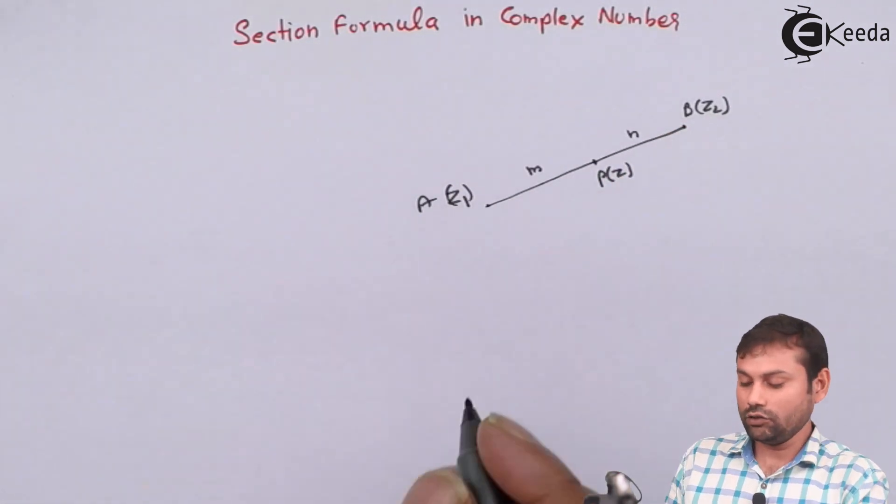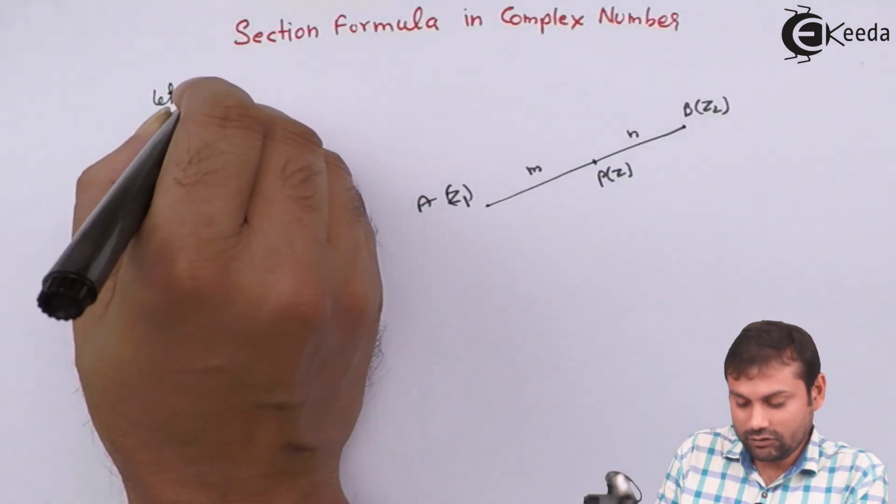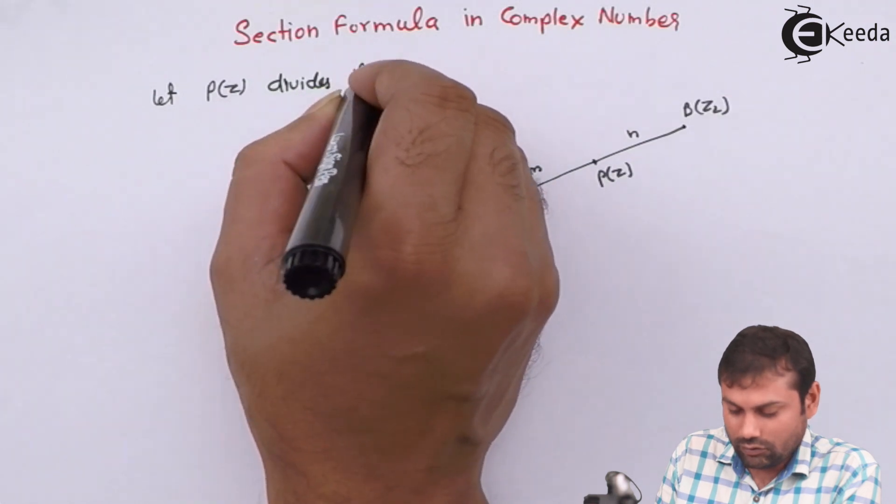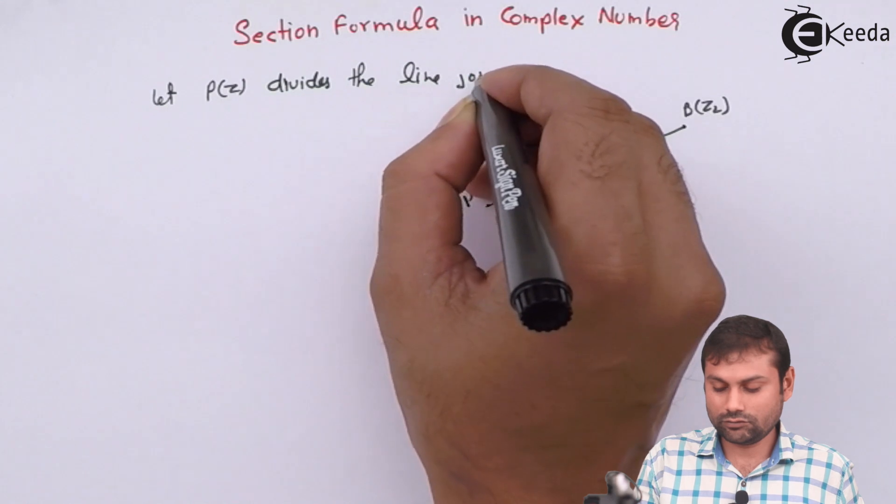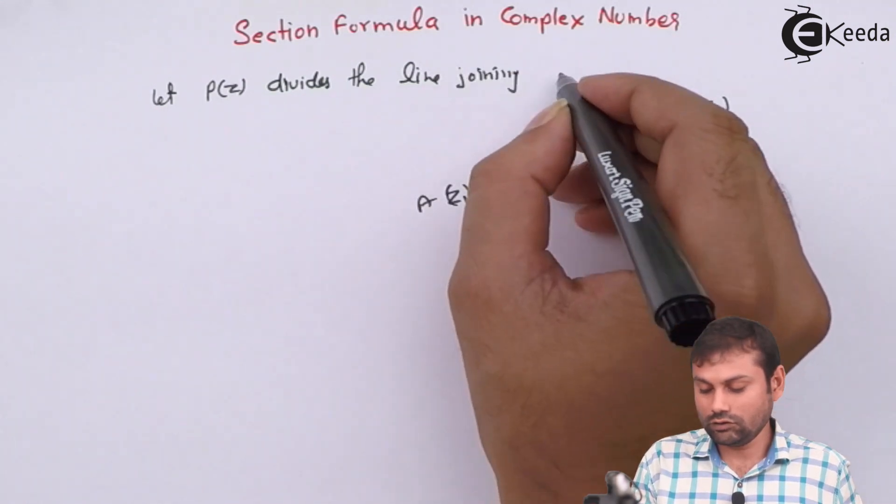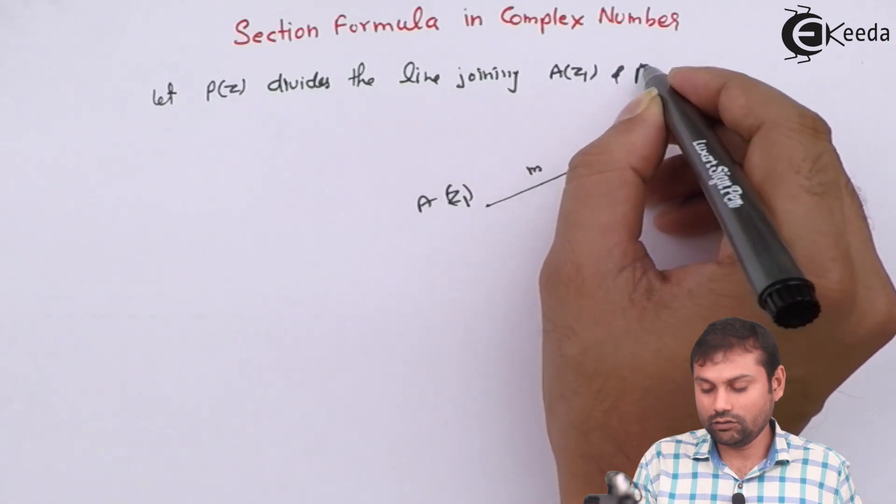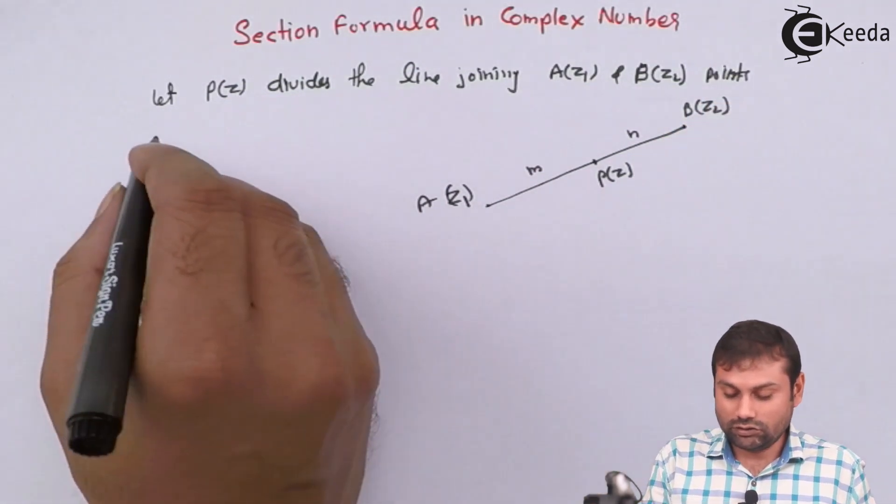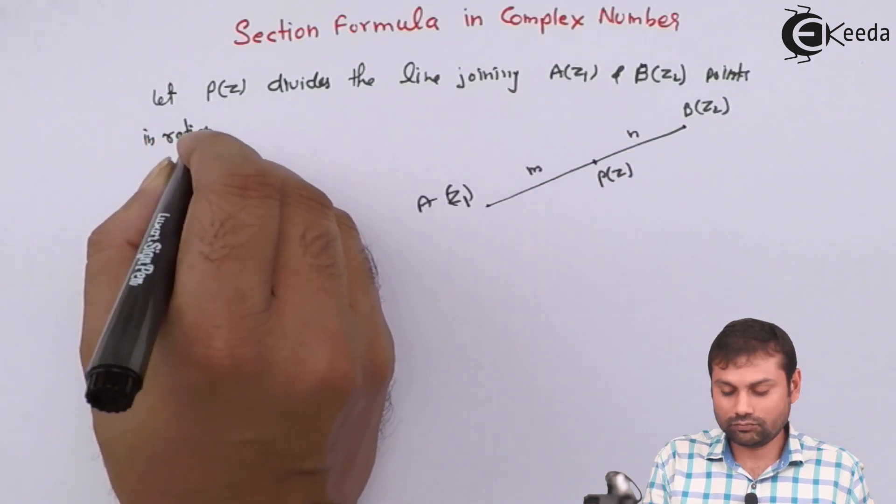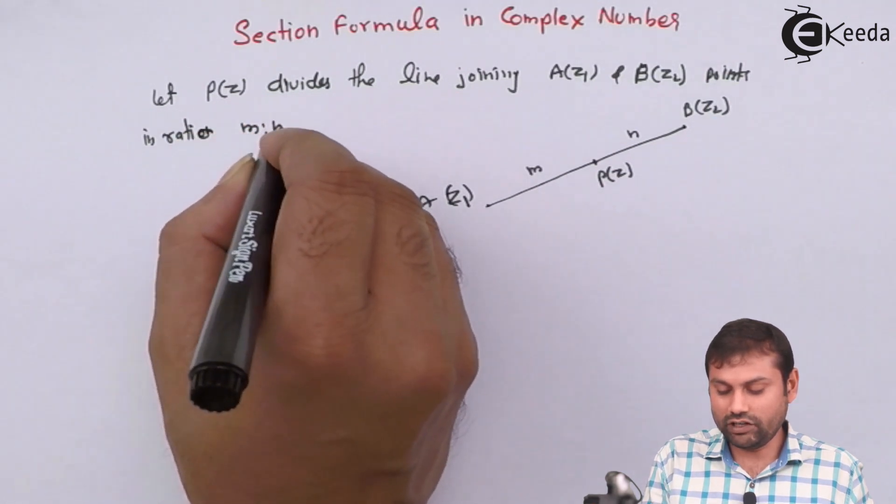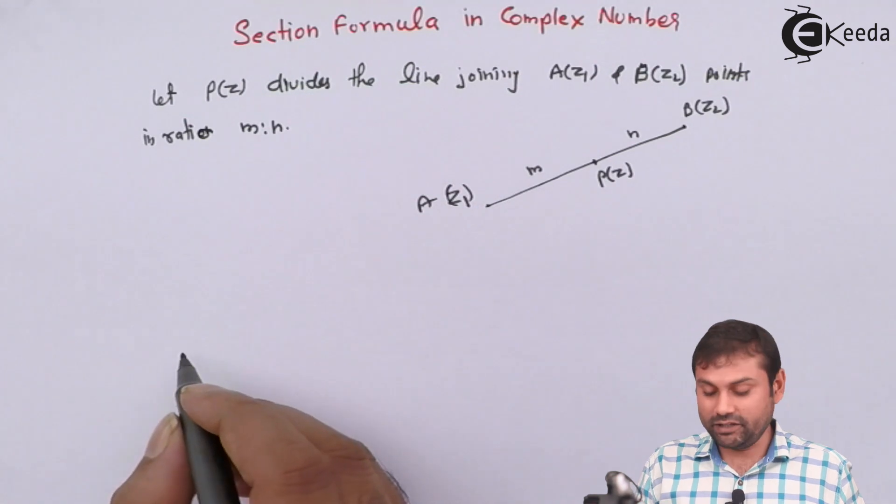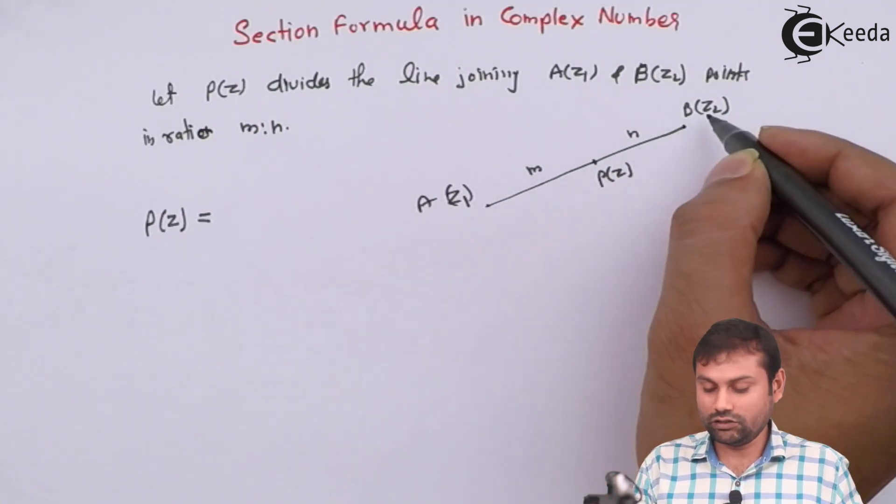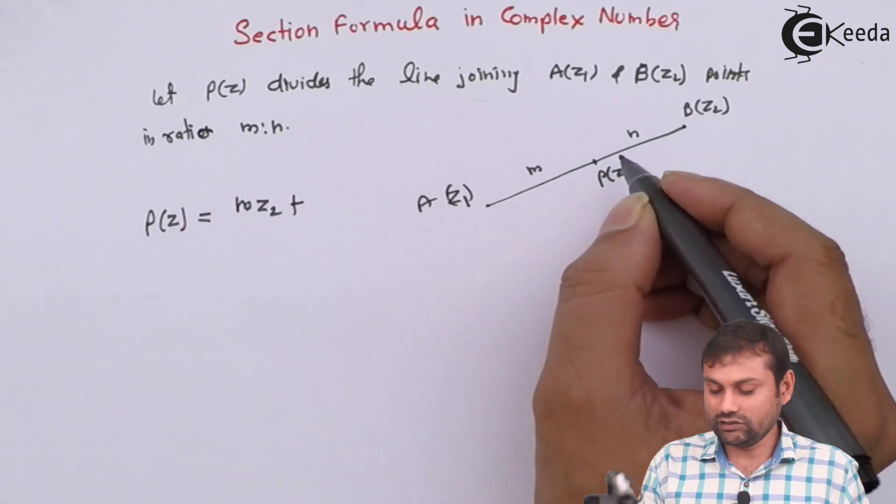तो section formula क्या होगा? तो चलिए यहाँ पे हमने पहले लिख लेते हैं A(z1) and B(z2) points, okay, points in ratio M is to N. Then what is the coordinate of P(z)? So coordinate of P(z) will be same thing, कैसे आप वहाँ पे करते हैं coordinate geometry में: M z2 plus N z1 upon M plus N, okay.